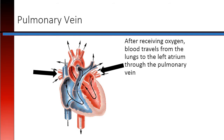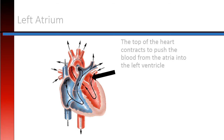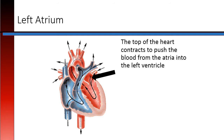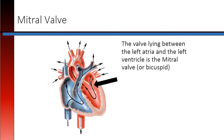Pulmonary vein: After receiving oxygen, the blood travels from the lungs to the left atrium through the pulmonary vein. The top of the heart contracts to push the blood from the atria into the left ventricle. The mitral valve, or the bicuspid valve, lies between the left atria and left ventricle.